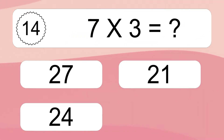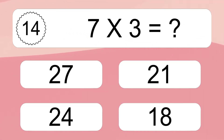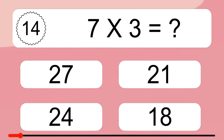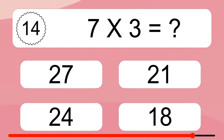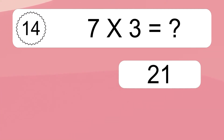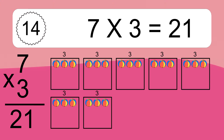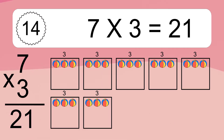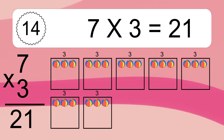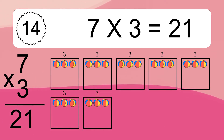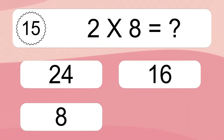Seven times three equals what? Seven times three equals 21. We have seven boxes and each box has three colorful balls inside. If you count all the balls in all the boxes together, you will have seven times three balls. This equals 21 balls.